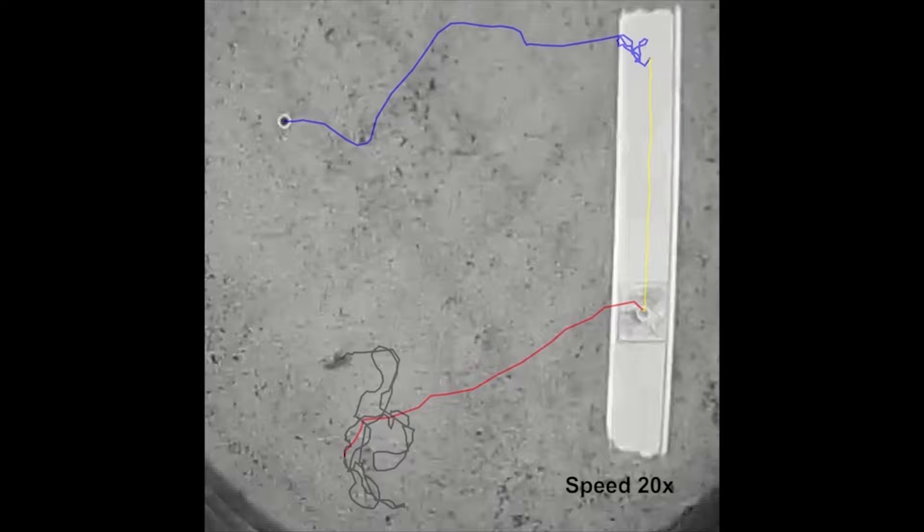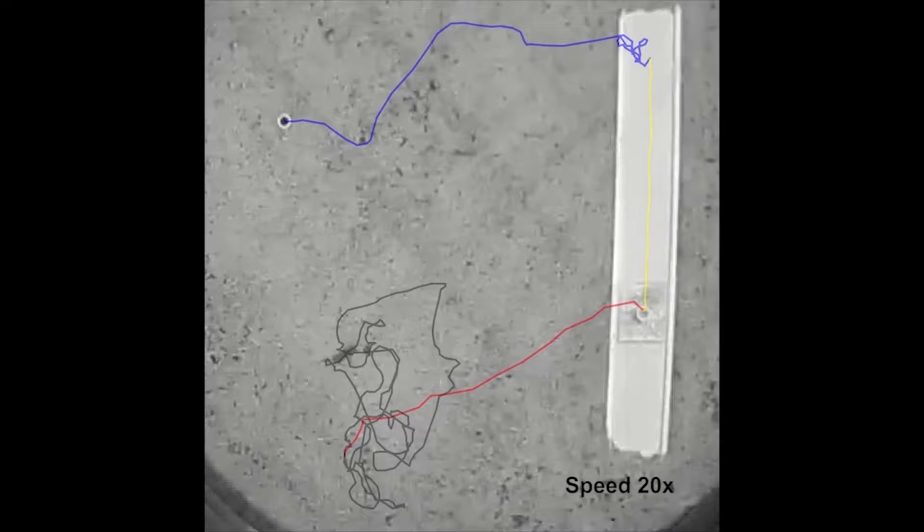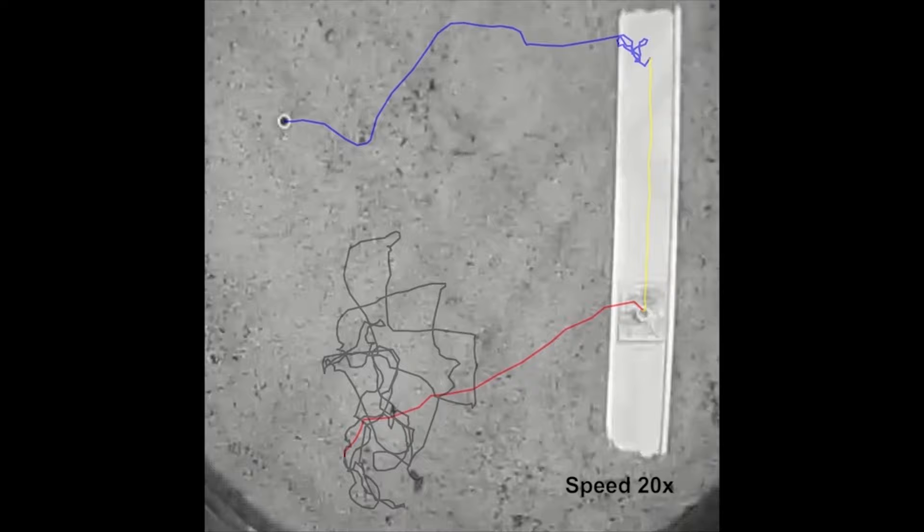Since path integration requires that an animal possess a biological compass with which to orient, we next investigated which sensory cues Neogonodactylus oerstedi use as compass cues for orientation.